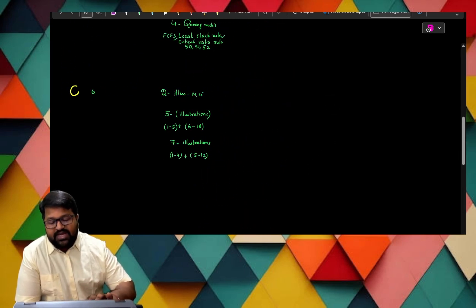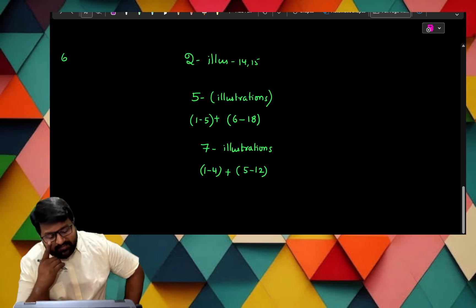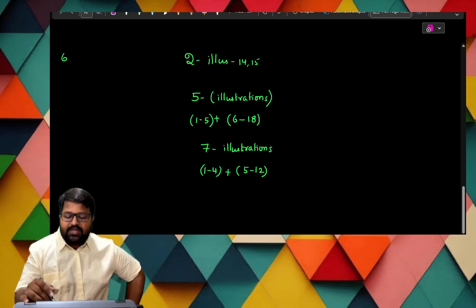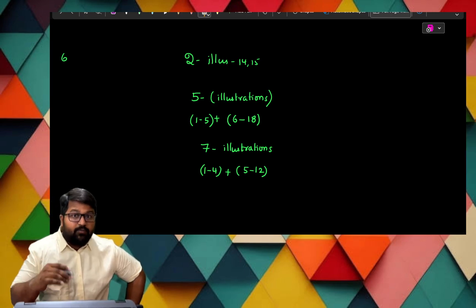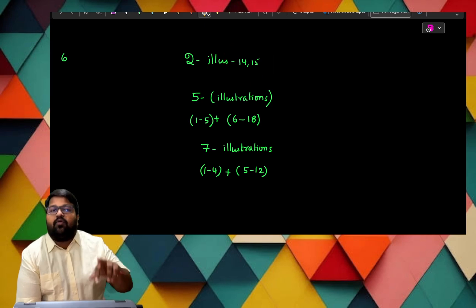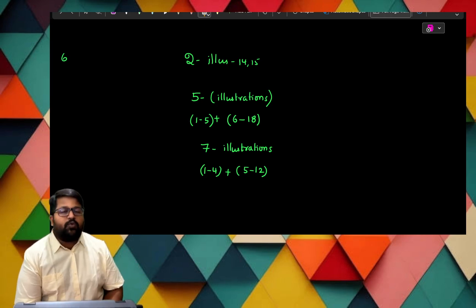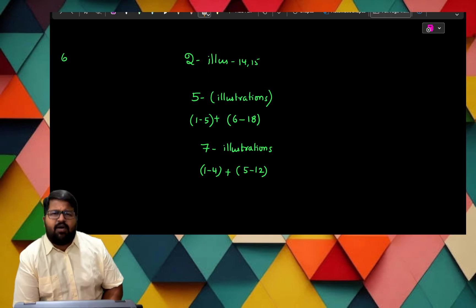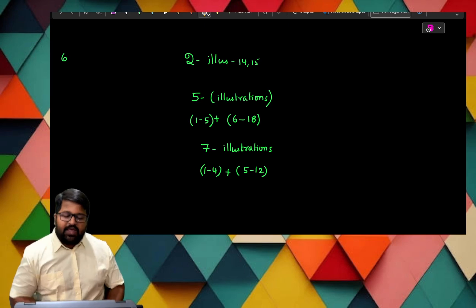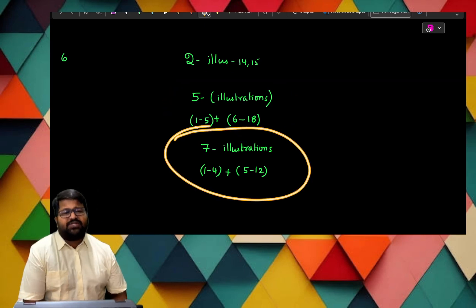What is the last category, C category for practical part? The C category has even second module. In second module we are having the area where two illustrations are there: 14 and 15. They are very large. If you start the problem, it will definitely take 45 minutes to one hour, but the score you will get will be max seven marks. So I kept them in the C category. And in five we are having some illustrations, and also seven we are having illustrations. These are also in category C.